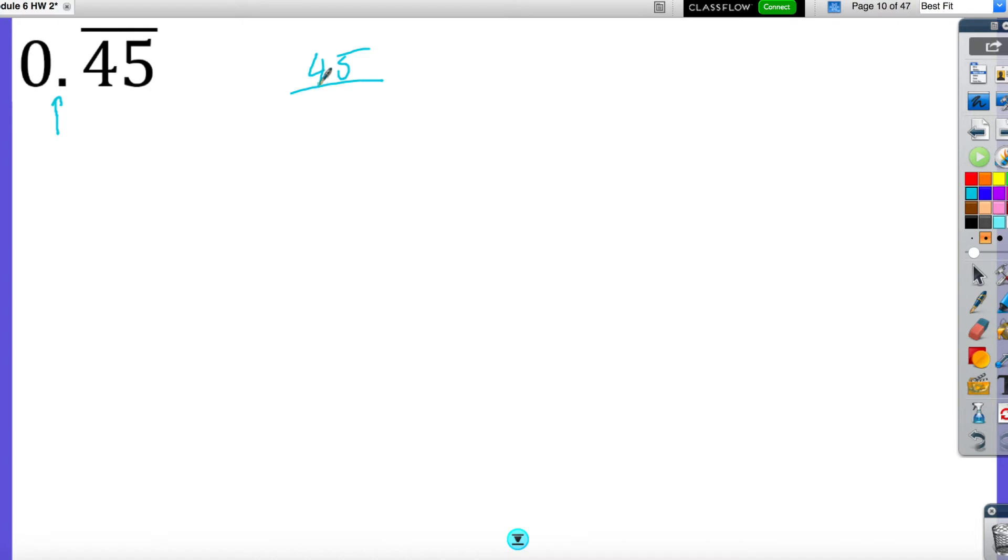You just match the numbers that are repeating and put 9 under it, that amount of 9s under it. So what do I mean by that? 45, it's going to be 0.454545. So the 4, 5 are the two numbers repeating. Therefore, it's two numbers, so I put two 9s under it. And then you're done.